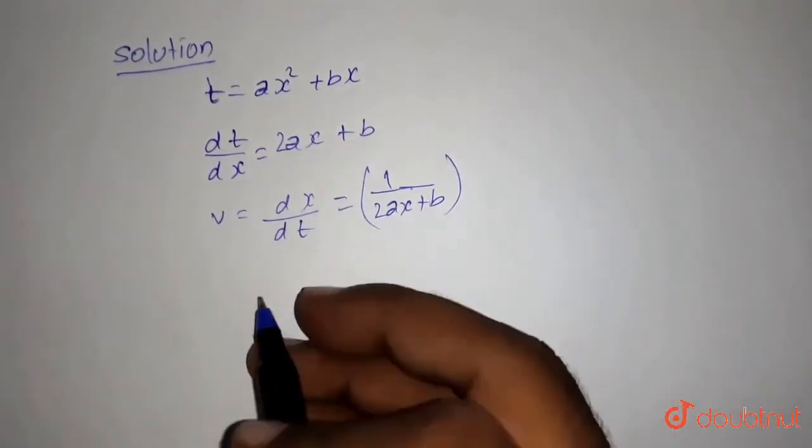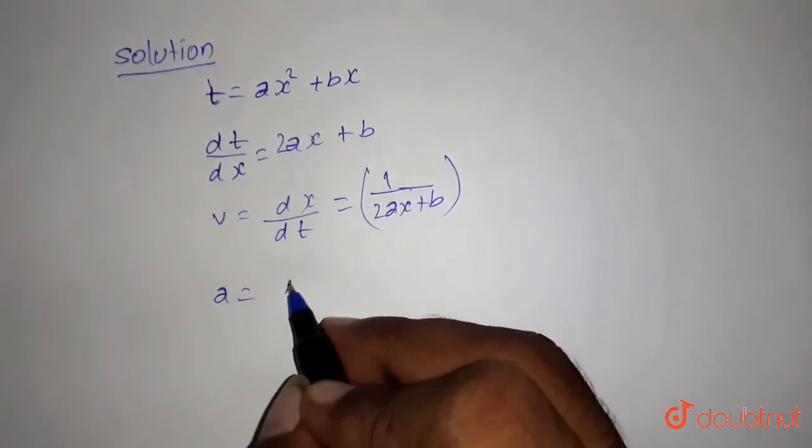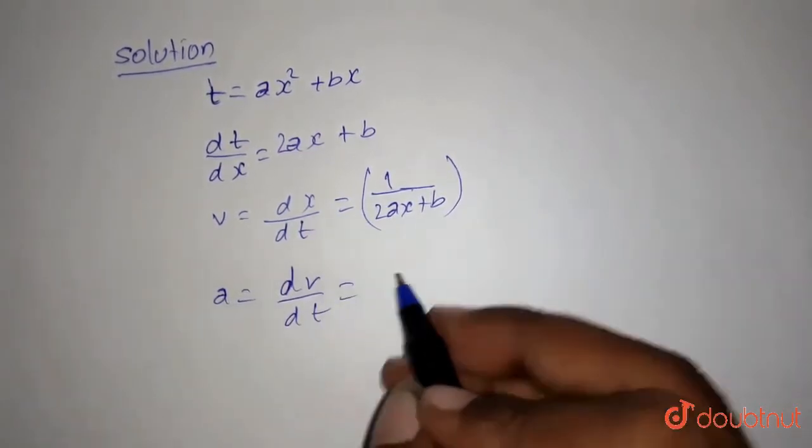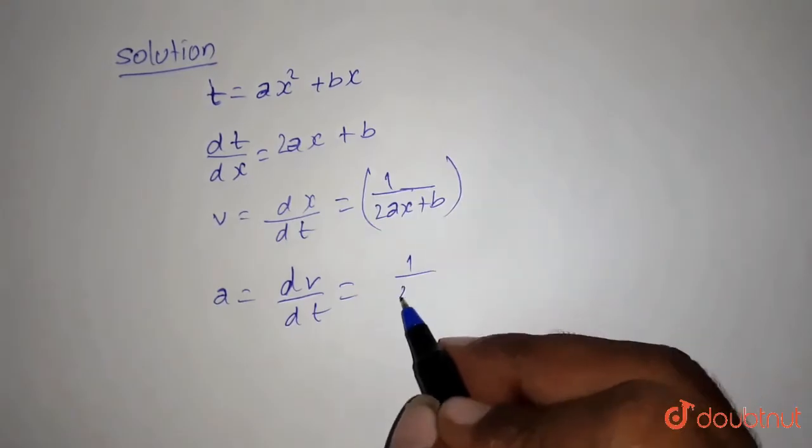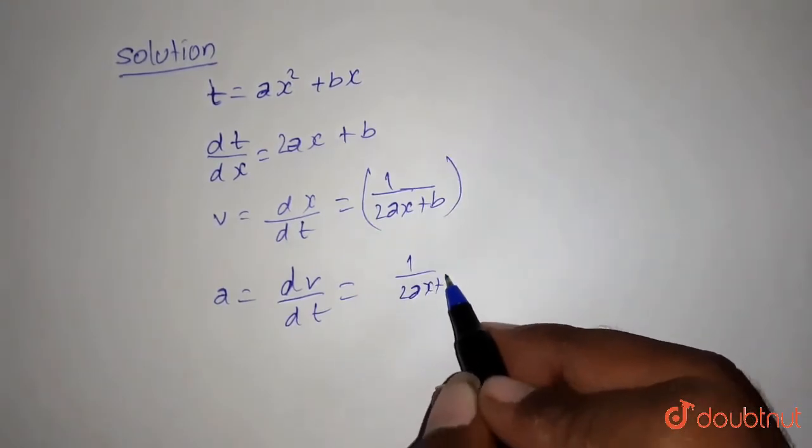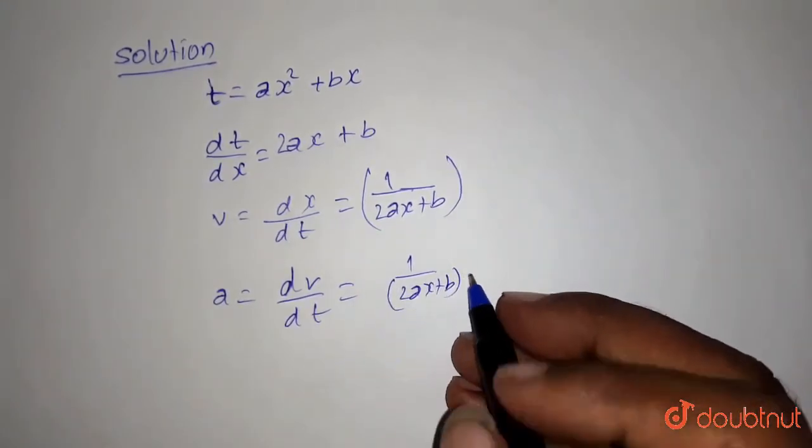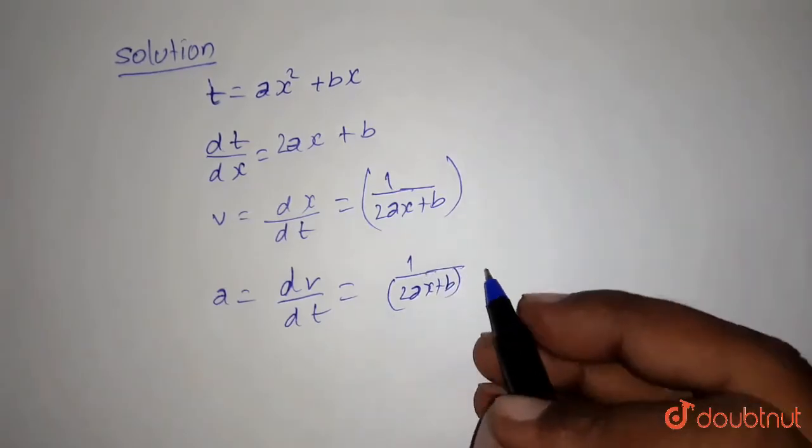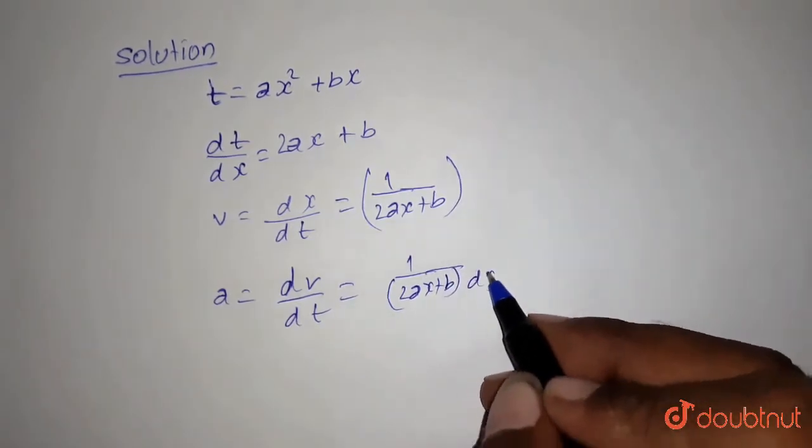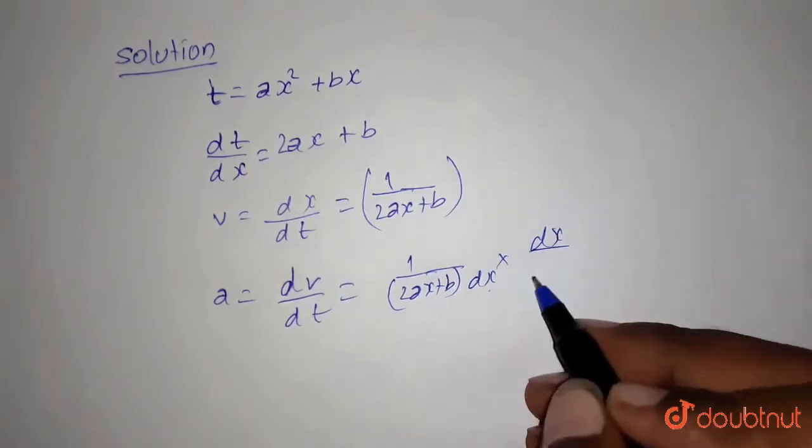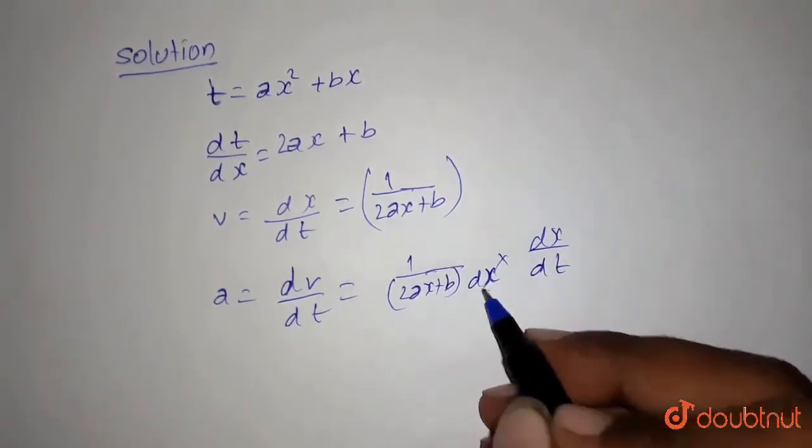And as we know, acceleration equals dv by dt. So it will be 1 by 2ax plus b with respect to dt. So it will be with respect to dx into dx by dt. You can write it as this.